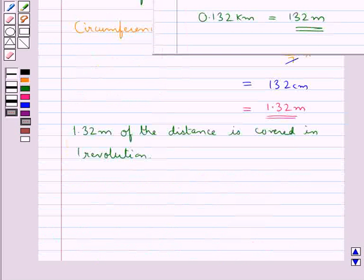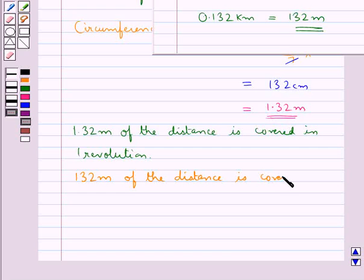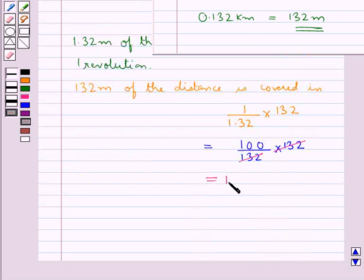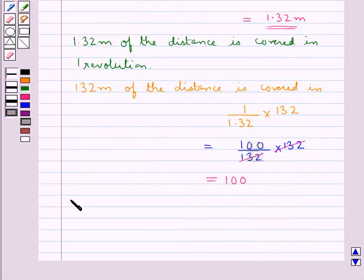So let's find out how many revolutions will make it to travel 132 m of the distance. 132 m of the distance is covered in 1 upon 1.32 into 132 that is equal to 100 upon 132 into 132.